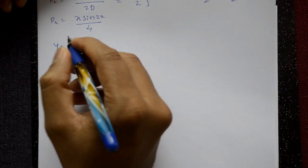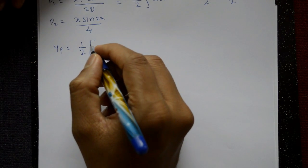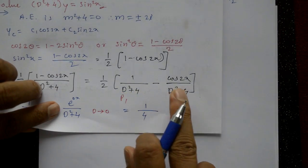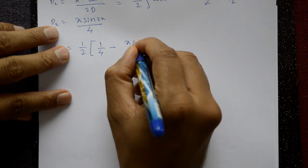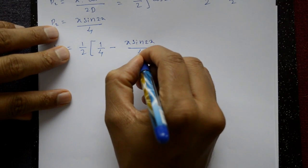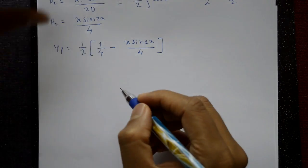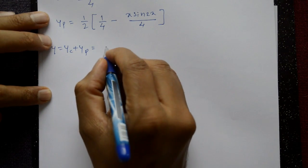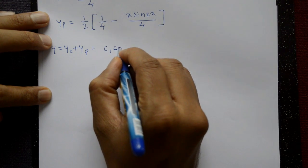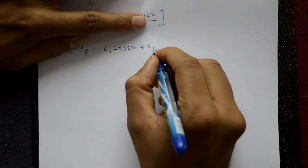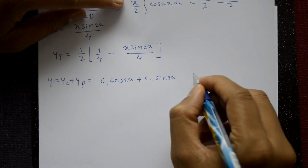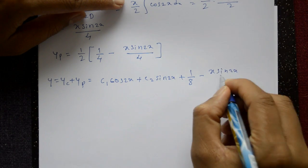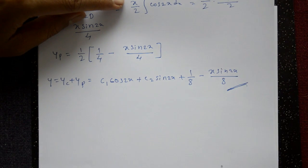The particular integral is 1/2 into (P1 minus P2) = 1/2 into (1/4 minus x·sin(2x)/4). The complete solution is y equals yc plus yp: c1·cos(2x) plus c2·sin(2x) plus 1/8 minus x·sin(2x)/8. This is the required complete solution.